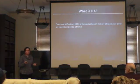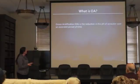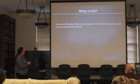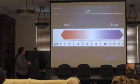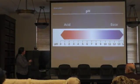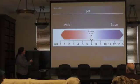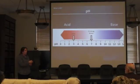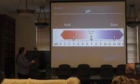Has everyone heard of ocean acidification before? So this might be a little bit of a review. It's the reduction in pH. We have the pH scale — neutral is seven, acidic is less than seven. So juice, coffee, tea — all of that is acidic. And then bases are above seven, so bleach and that sort of thing are all above that.